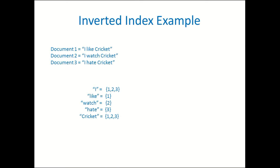Another important and interesting data structure is inverted index. Here is an example: there are three documents and 'I' is mentioned in all three of them. 'Watch' and 'Hayter' are mentioned in only one of them. 'Cricket' is again mentioned in all three of them. So the inverted index for 'I' and 'Cricket' will be one, two, and three. An inverted index is a list of document numbers where the term is present at least once.